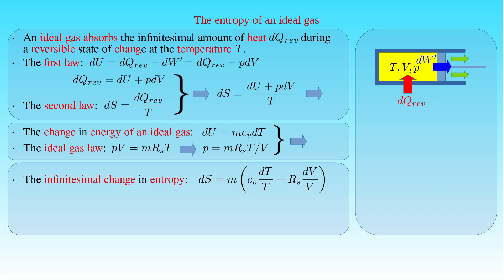Let us suppose that the initial state A and the final state B of the expanding ideal gas are described by the pair (V1, T1) and the pair (V2, T2) in the temperature versus volume graph. We can compute the difference in the entropy S between states B and A by integrating the differential of S along any reversible process between the initial and final states. Since the process is reversible, we can choose any path for the integration to our convenience.